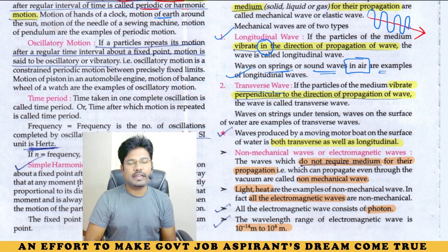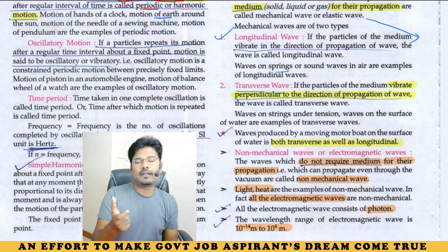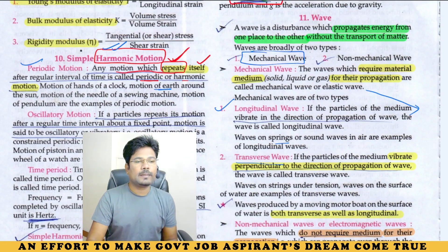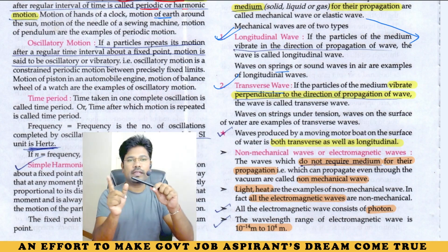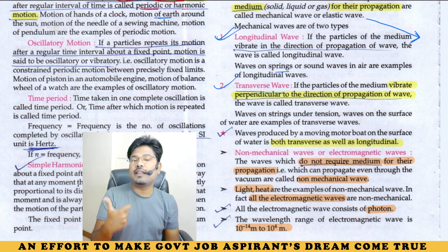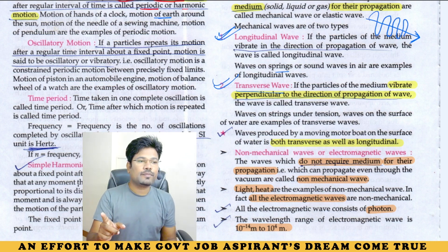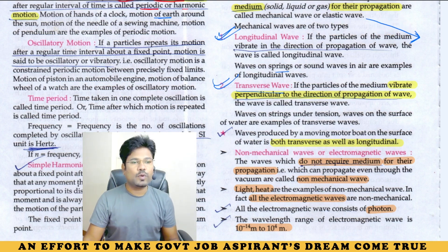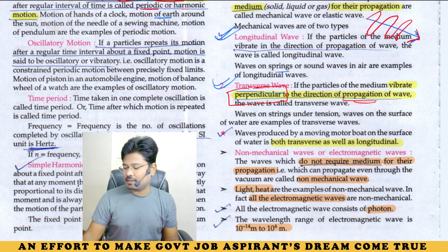Transverse waves are those in which the particles of the medium vibrate perpendicular to the direction of propagation of the wave. So if the wave travels in the Z direction, the vibration occurs in the X direction — perpendicular to the propagation direction.